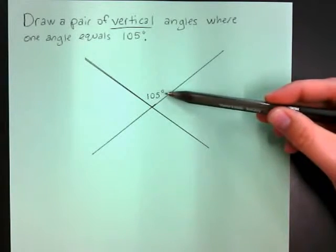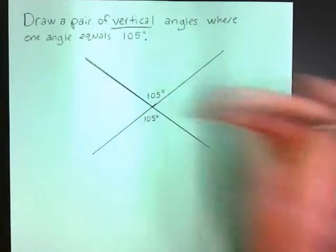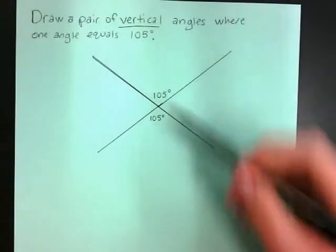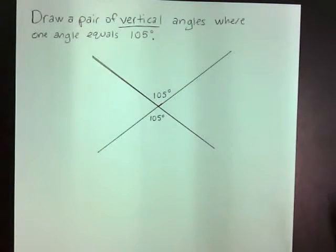And I know if this one is 105 degrees, this one on the other side also equals 105 degrees. So I created a pair of vertical angles, where one angle equals 105.